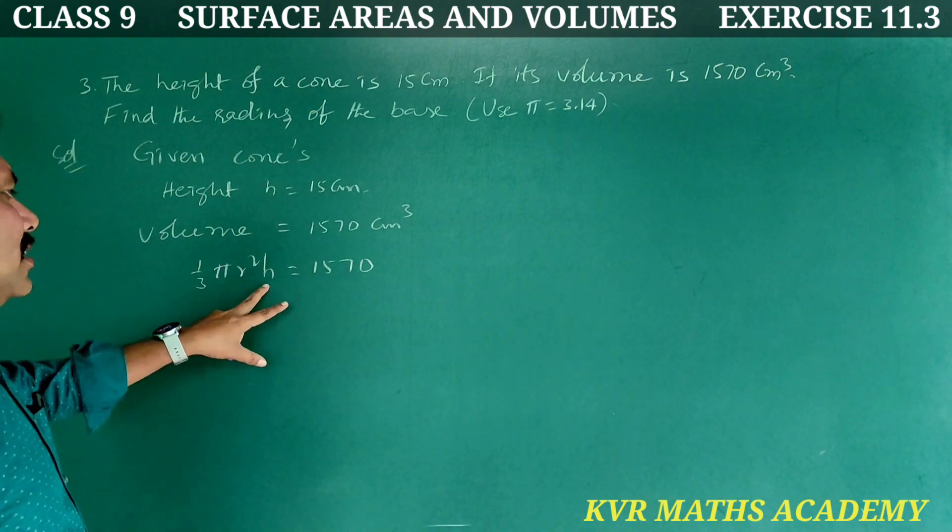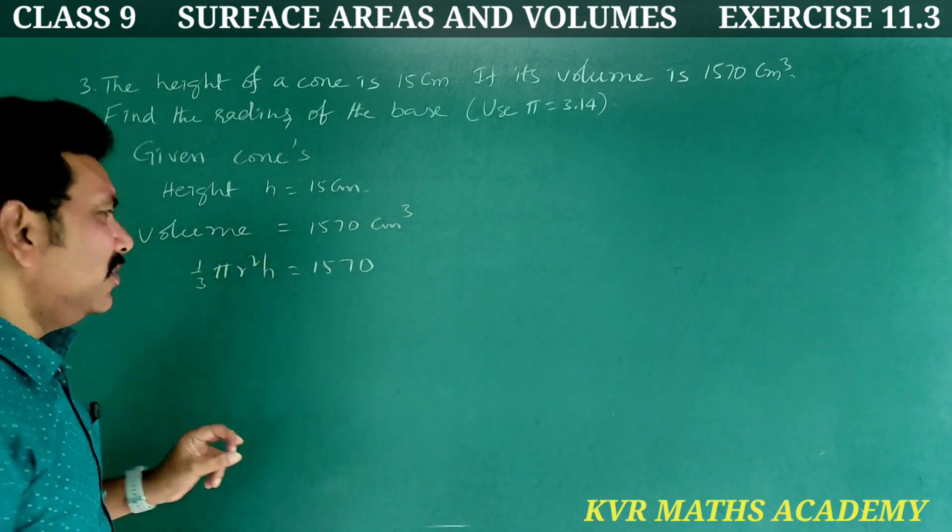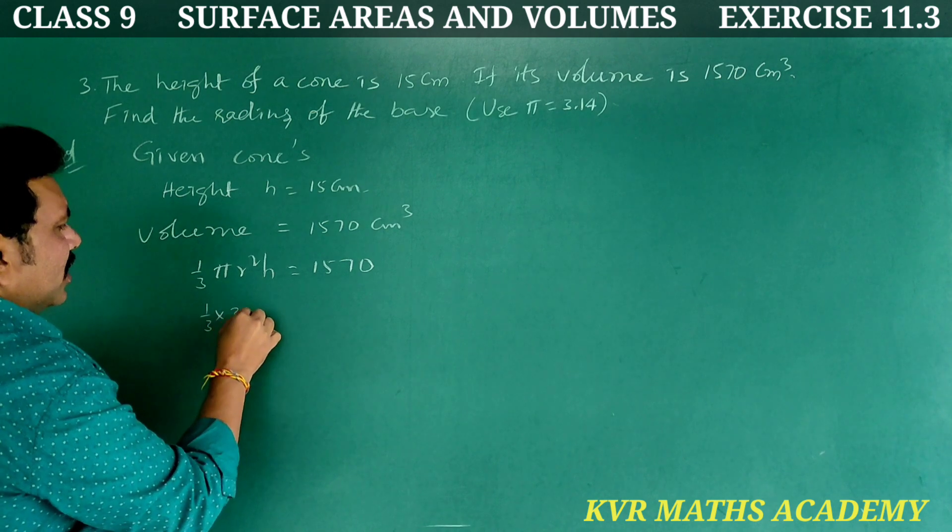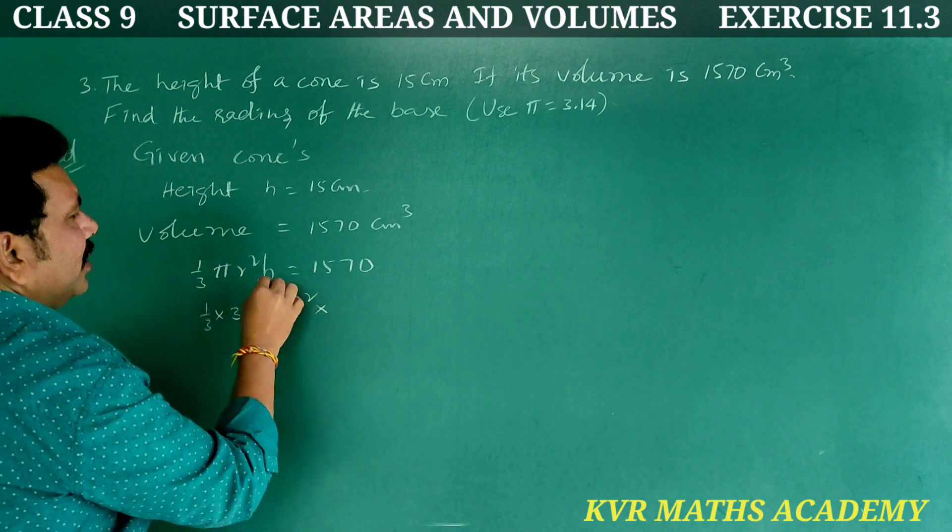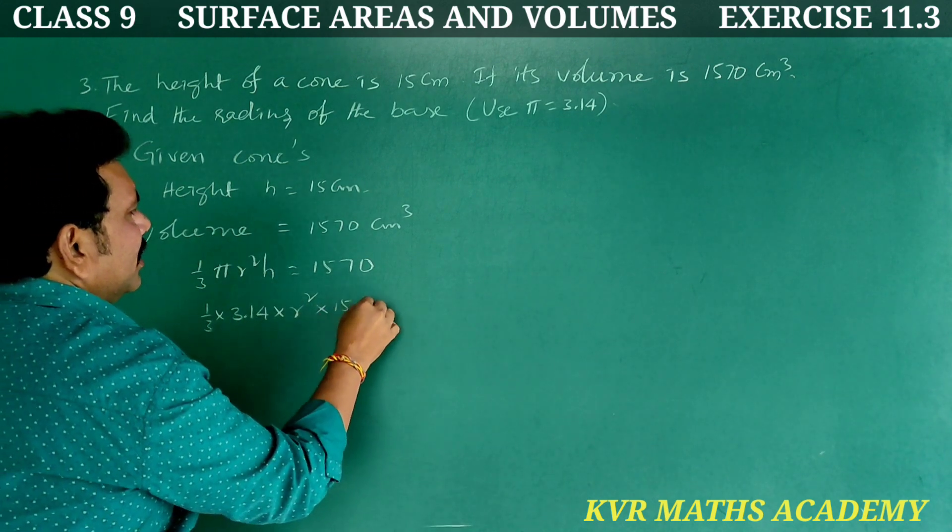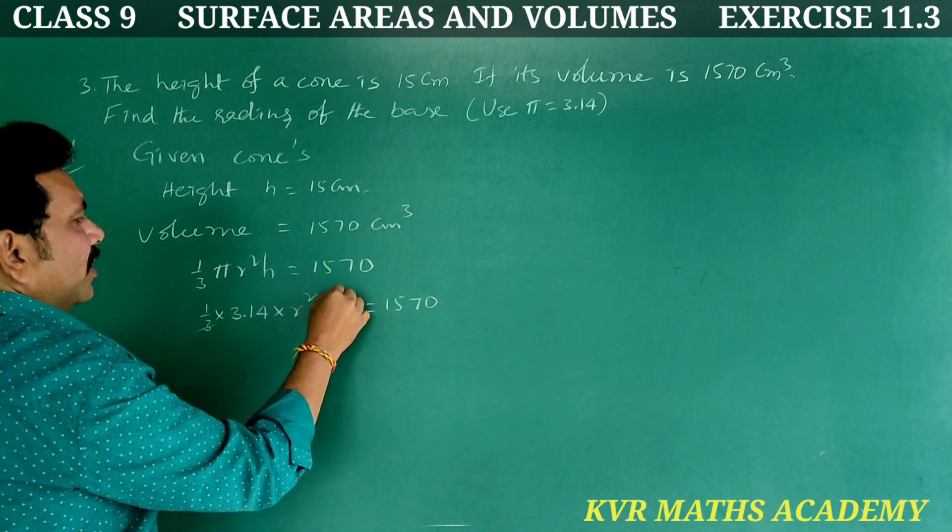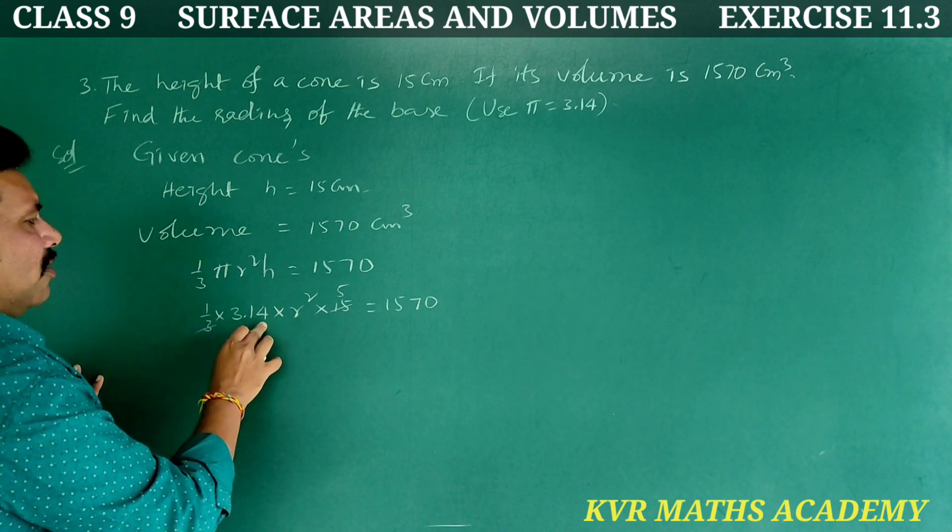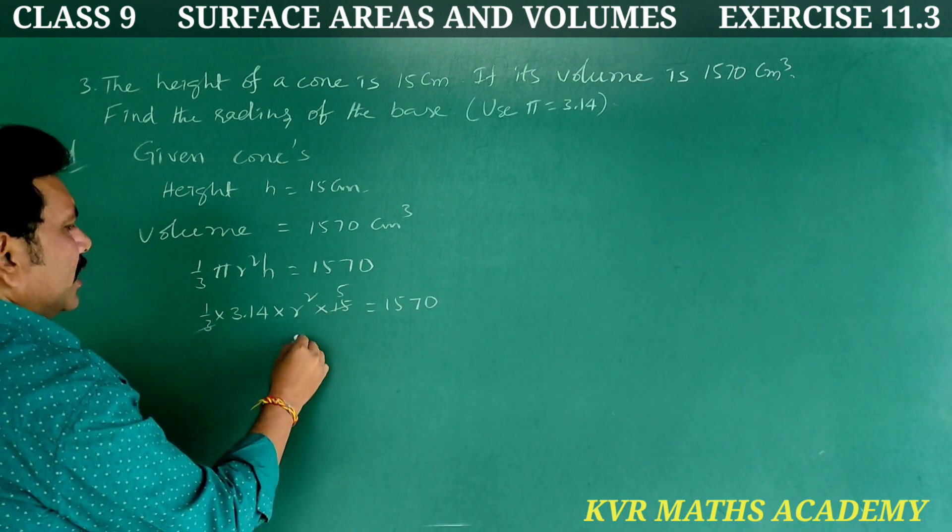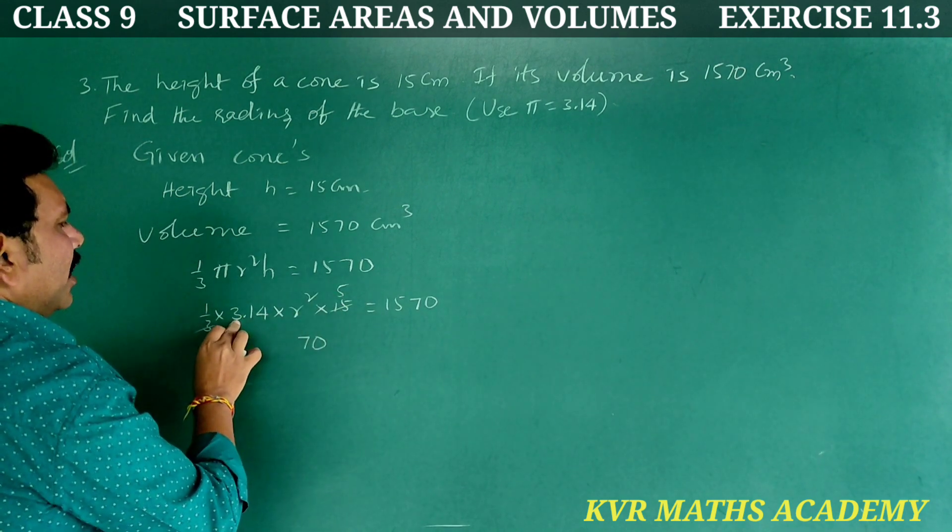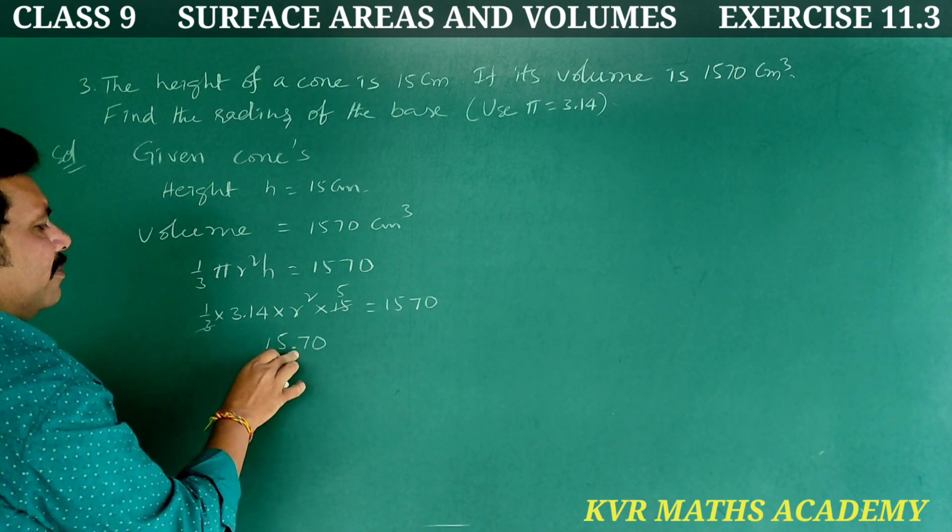In the place of h, let us substitute 15 and in the place of pi, let us substitute 3.14. So, 1 by 3 into 3.14 into r square into 15. 5 into 3.14 r square is equal to 1570.